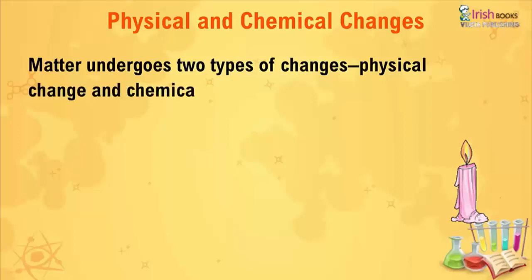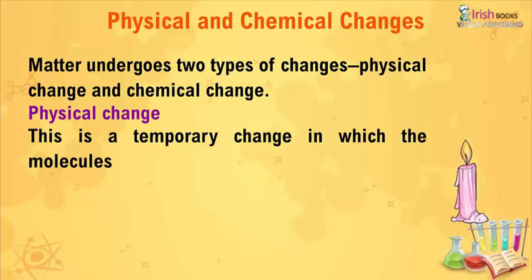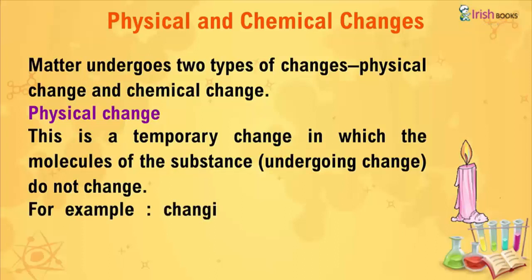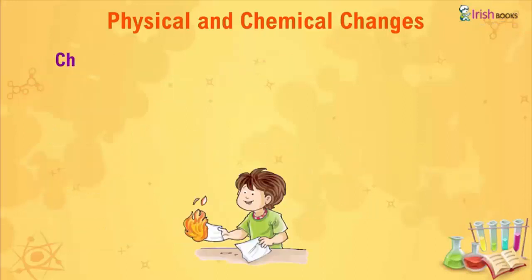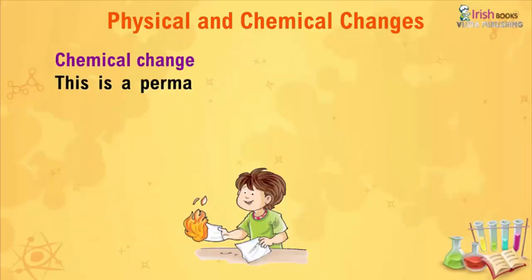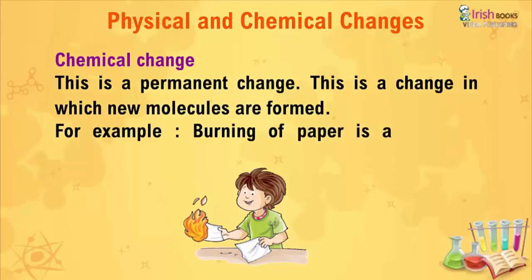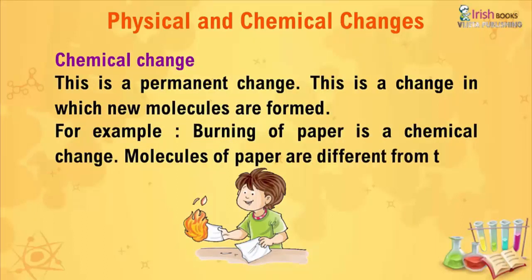Matter undergoes two types of changes: physical changes and chemical changes. A physical change is a temporary change in which the molecules of the substance do not change. For example, changing water into ice or melting of wax. A chemical change is a permanent change in which new molecules are formed. For example, burning of paper is a chemical change — the molecules of paper are different from those of ash.